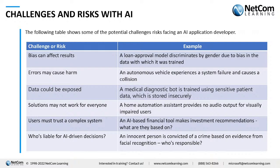Users must be able to trust a complex system. AI-based financial tools making financial recommendations are only useful if users trust them — and trust is built when the model has performed well in the past. Who is liable for AI-driven decisions? We really need to decide who is answerable if something goes wrong, and we want to keep malfunctions to a bare minimum.